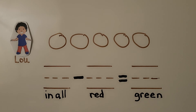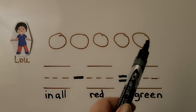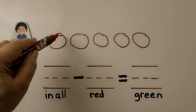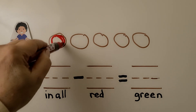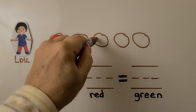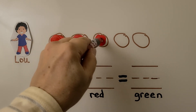Here's Lou. Lou has five apples. Three of his apples are red and the rest are green. How many of Lou's apples are green? We can draw five circles — one, two, three, four, five — for his apples. It told us that three of his apples are red, so we can color three of them red: one, two, three. Those will be the three red apples.